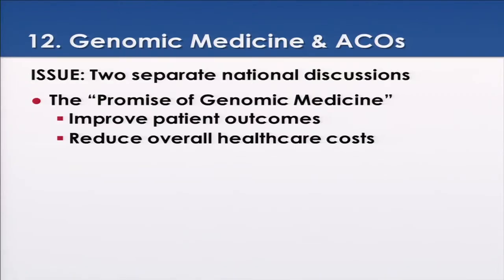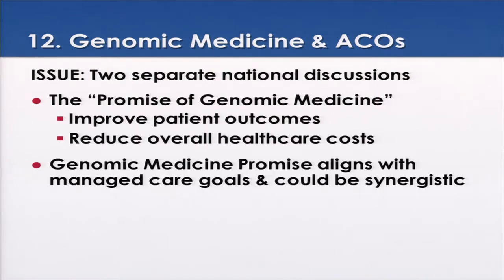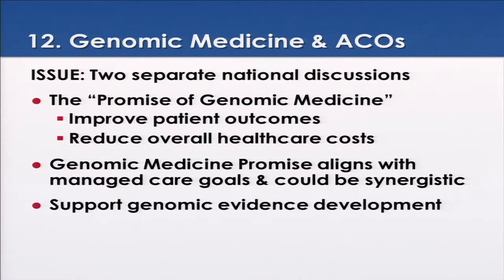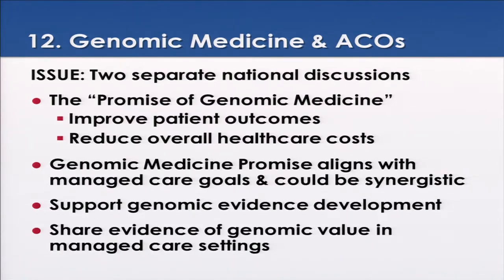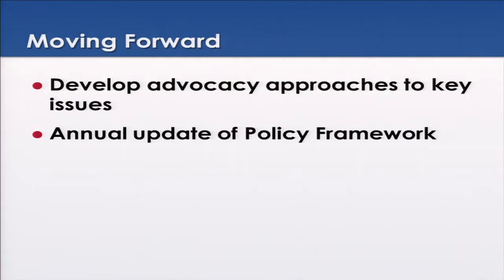The final issue is genomic medicine and accountable care organizations or healthcare delivery reform. These seem to be two separate national discussions, though I find them very merged in Vermont. The promise of genomic medicine is to improve patient outcomes and reduce overall healthcare costs — aligning with managed care goals and potentially being synergistic. This genomic evidence development needs to happen, and that evidence of genomic value needs to be shared in managed care settings. CAP is developing advocacy approaches and plans an annual update of the policy framework.